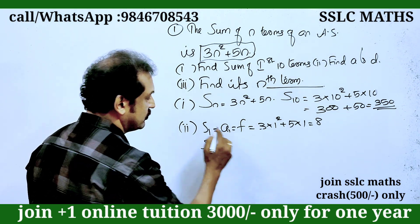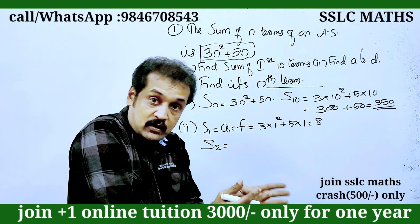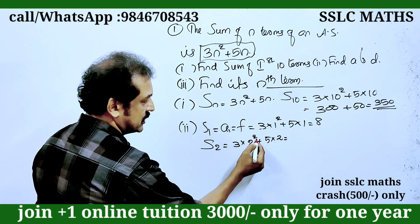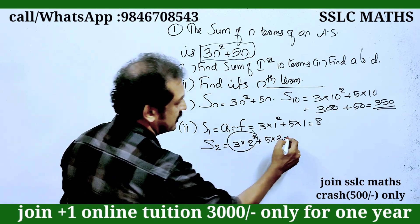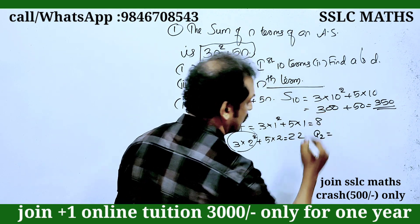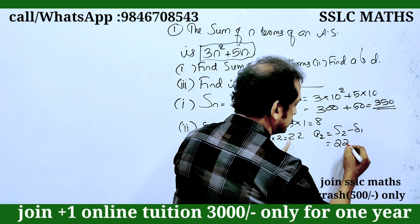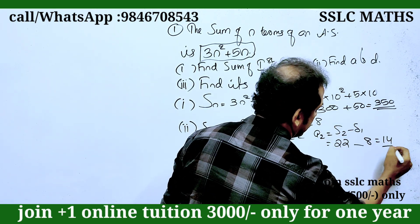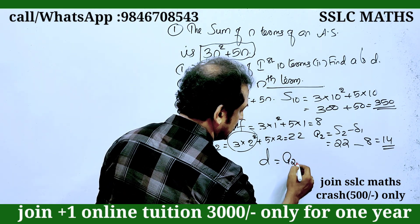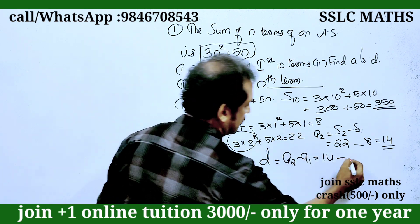Next, we can see S2. S2 means the sum of 2 times. The second A is 3 into 2 squared plus 5 into 2. 2 squared is 4. 4 into 3 is 12. This gives us 22. S1 is 8, S2 is 22. A2 equals S2 minus S1, that is 14 minus 8. The answer is 6. That is D.